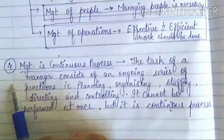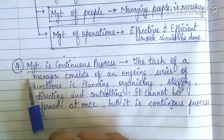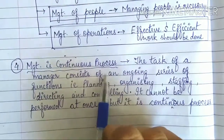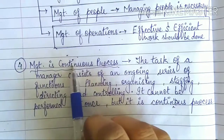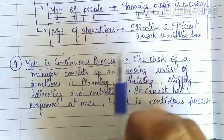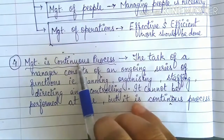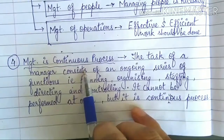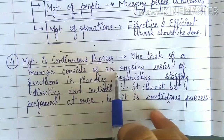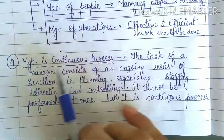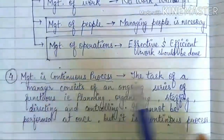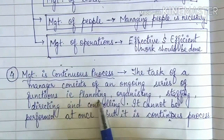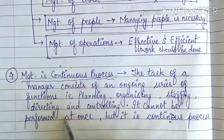Now comes the fourth feature of management: management is a continuous process. By the term itself, it means it will continue ever and ever as long as our business goes on. If we have to continue all the functioning and operations of the business, then management should also continue. The task of a manager consists of an ongoing series of functions — planning, organizing, staffing, directing, and controlling.